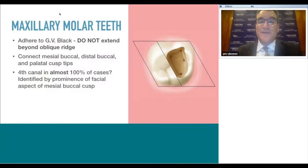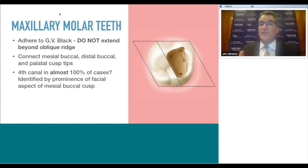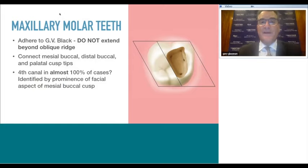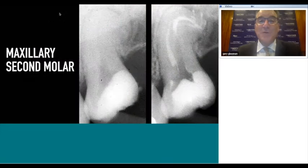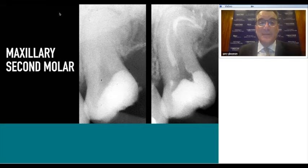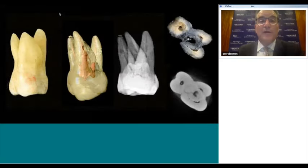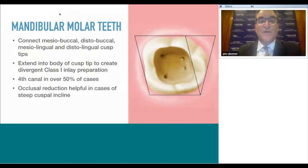Maxillary molar: for the first molar, look for and try to find the MB2 canal. Exhaust all efforts without compromising the structural integrity of the tooth or risking perforation. Maxillary second molars are very difficult to treat—understand the concepts of straight line access and create a proper glide path to allow nickel-titanium files to follow smooth pathways created with stainless steel hand files.